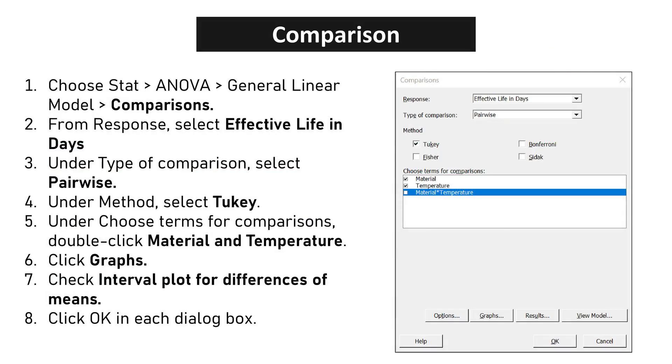Choose STAT, ANOVA, General Linear Model, Comparisons. From Response, select Effective Life in Days. Under Type of Comparison, select Pairwise. Under Method, select Tukey. Under Choose Terms for Comparisons, double-click Material and Temperature. Click Graphs. Check Interval Plot for Differences of Means. Click OK in each dialog box.